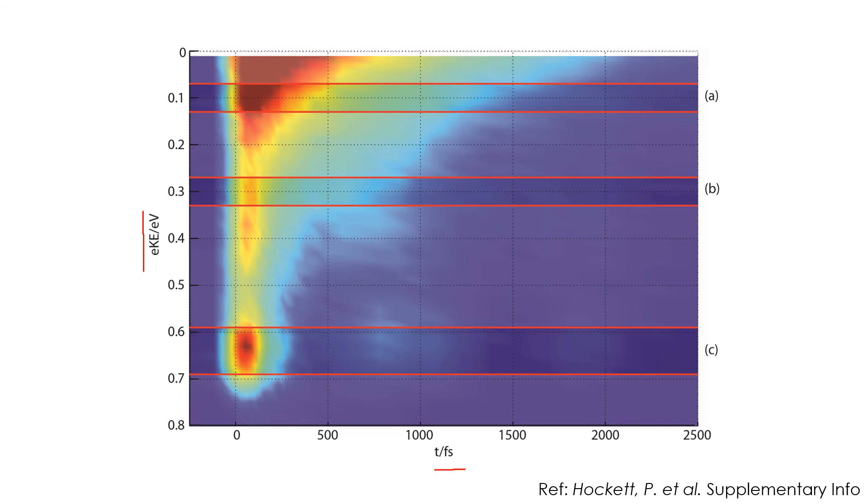These horizontal lines represent energy regions A, B, and C. These are the energy regions that Hockett et al. chose to examine more closely. We'll take a look at that now, but first I'd like to point out this area in region C, where a slight increase in the photoelectron count becomes visible.